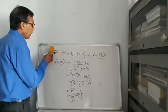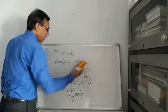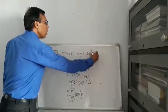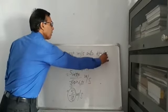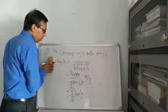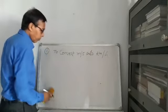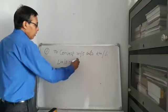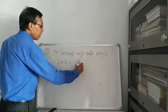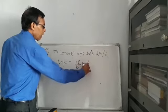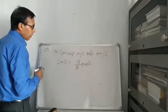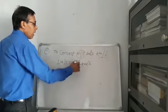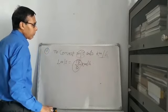Now if you have to convert meters per second into kilometers per hour, then 1 meter per second must be multiplied by 18/5 to get kilometers per hour. So this is the formula to convert between kilometers per hour and meters per second.